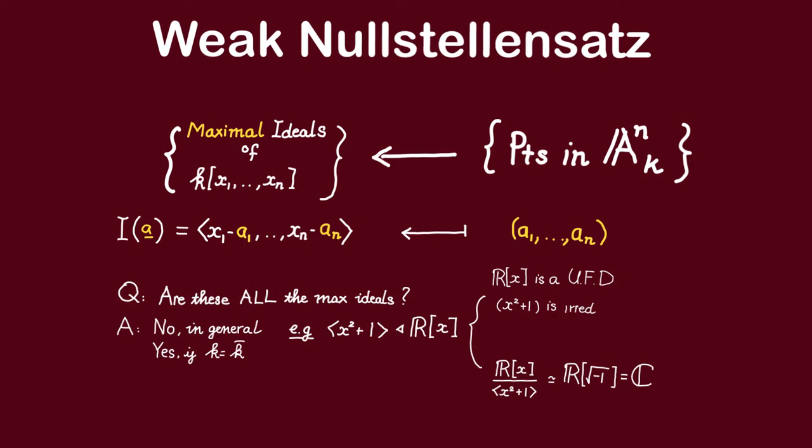Well, the answer turns out to be no in general. For example, if we look at the polynomial ring over the reals in one variable, then the ideal x squared plus 1 is a maximal ideal that is not of this form. There are two ways you can see that this is a maximal ideal. One way is to see that x squared plus 1 is irreducible. And since this polynomial ring is a UFD, any ideal generated by an irreducible element must be a maximal ideal. Alternatively, you could do what we just did before.